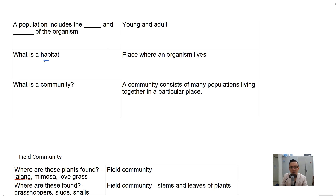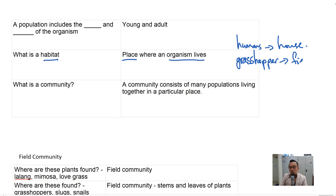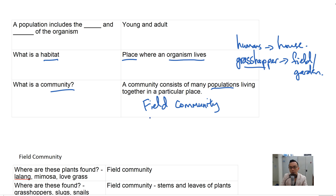What is a habitat? A habitat is a place where an organism lives. A habitat for humans is our houses; a habitat for a grasshopper would be in the field or garden — that's where the grasshopper stays. What is a community? A community consists of many populations living together in a particular place. We're going to look at a few communities: field, pond, seashore, and a few others.